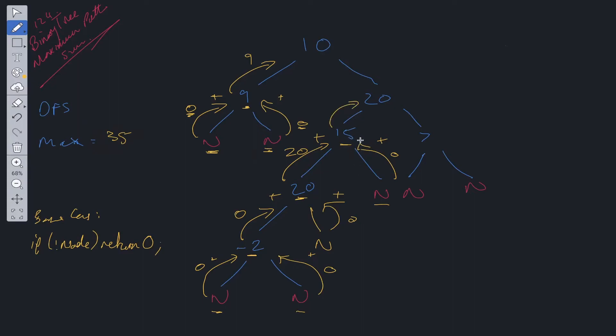What we return up from here is the root value plus the maximum between left and right. So that's going to be 20 plus 15, which is 35.